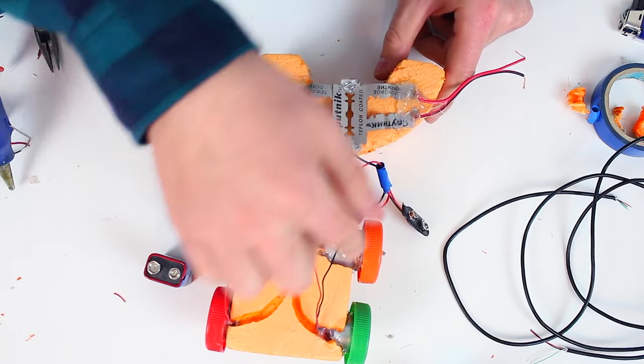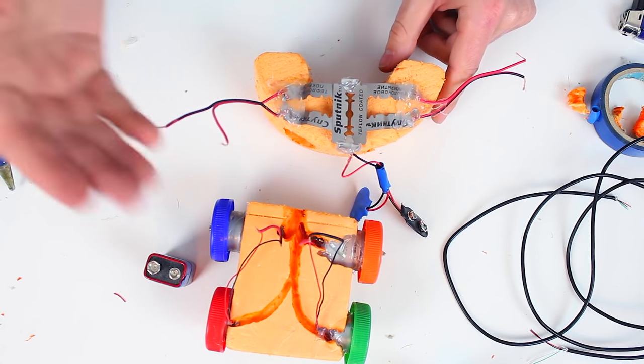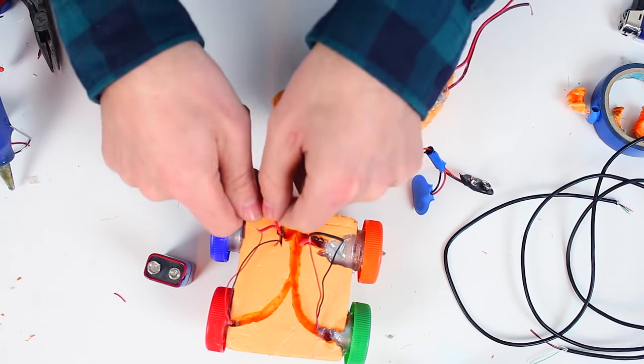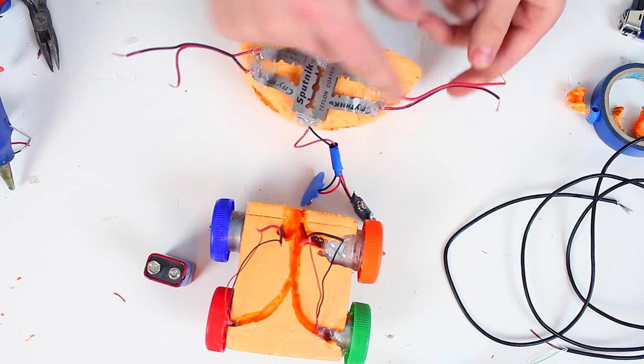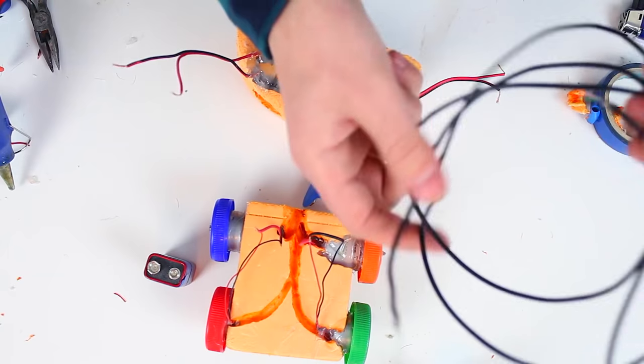And all that's left is to connect the wires. To make things clear, we connect these two wires to the right side and these two to the left. Now we are going to lengthen them.